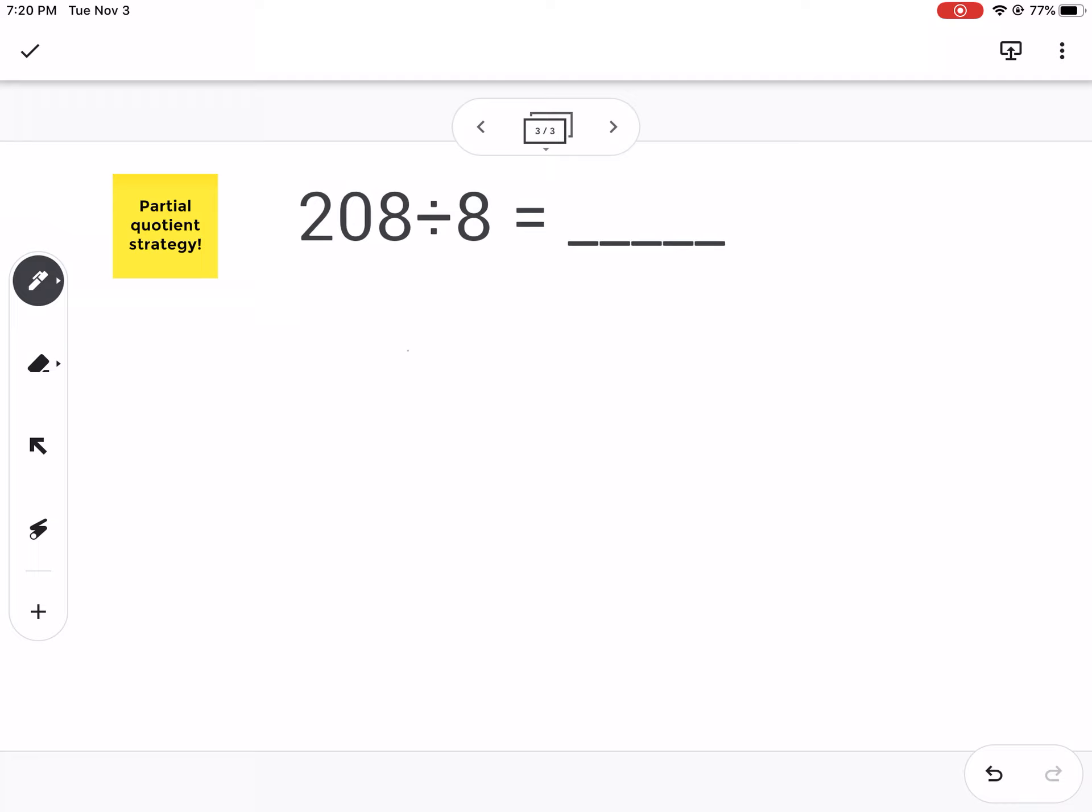So here we have 208 divided by 8. Again, that 208 is a pretty big number. And when I think about 8 times what number is 208, I'm still not sure. I'm not sure what this magic number is. But there is a way to figure it out with the partial quotient strategy.